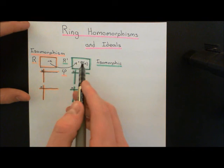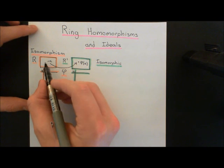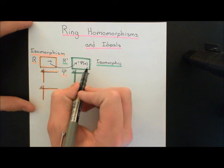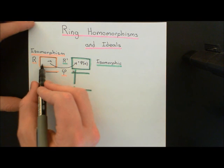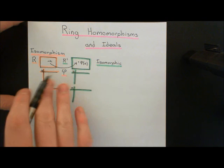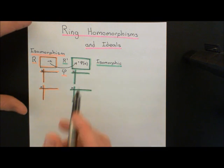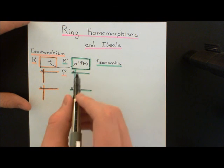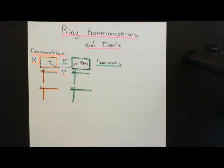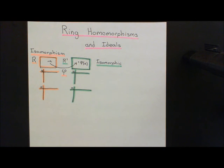We want this to be a bijective map, because we want it to be a relabelling map — both injective and surjective. Injective means we're not going to have multiple elements in the domain being mapped onto the same element in the codomain. Surjective means every element in the codomain ring has an element in the domain ring that was relabelled to become it. So this mapping truly represents the relabelling of elements in the first ring with elements in the second ring.